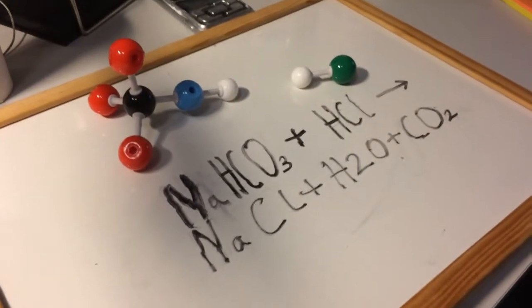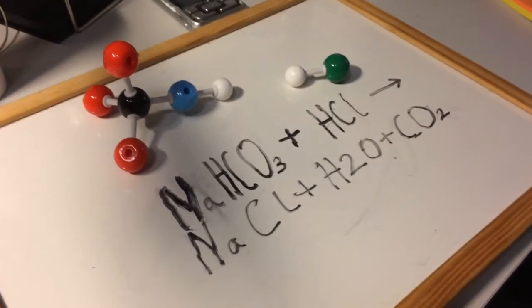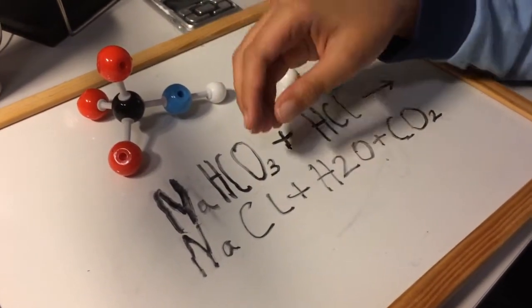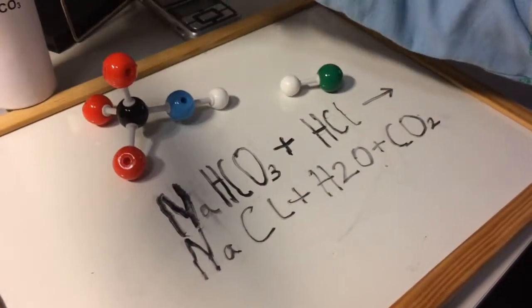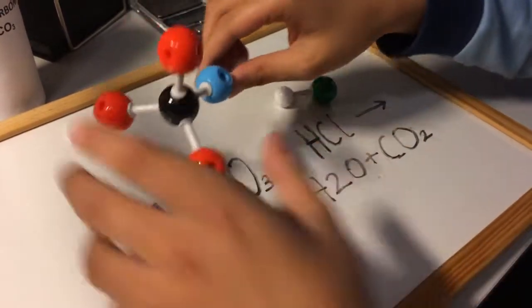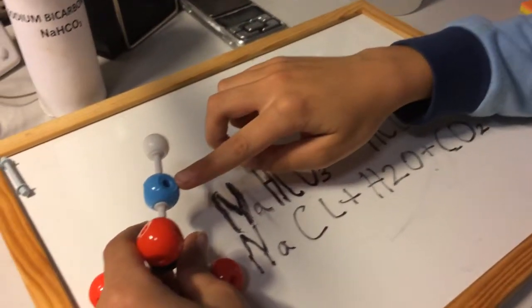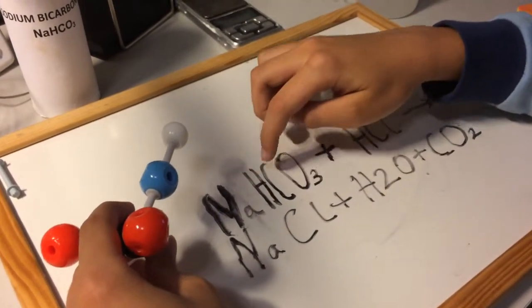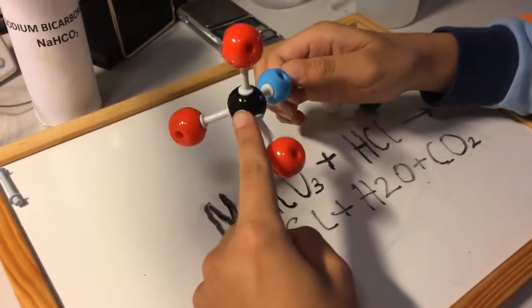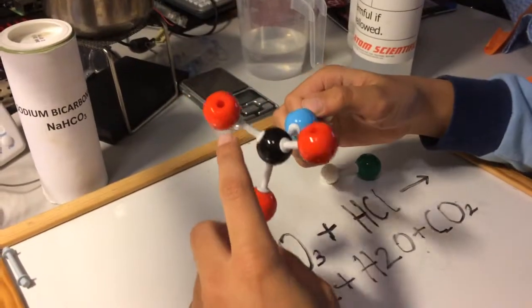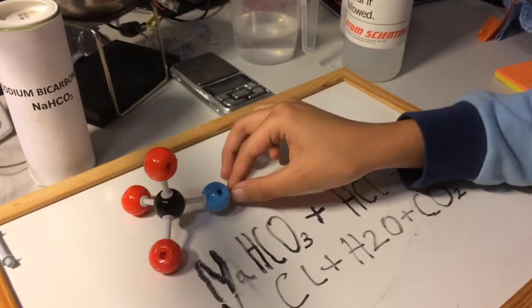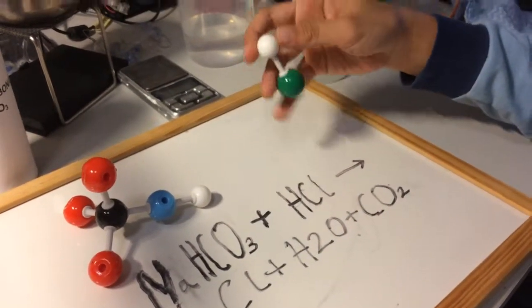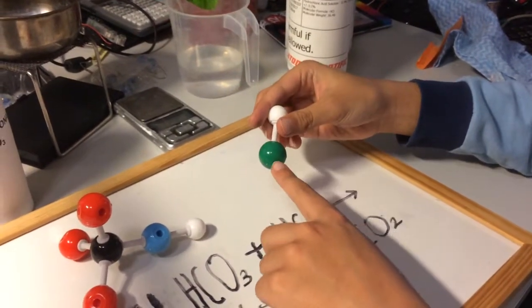Here we have the chemical formulas for the solutions we mixed. Here we have the sodium bicarbonate. It is made up of one sodium atom, one hydrogen atom, one carbon atom, and three oxygen atoms. We mixed this with the hydrochloric acid which is made from one hydrogen atom and one chlorine atom.